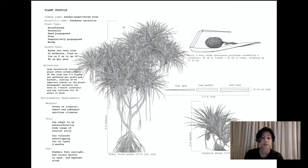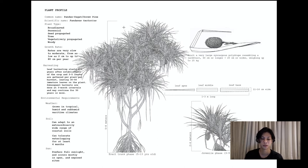For harvesting, you can start at the juvenile phase — around 3 years old — but you can only harvest about 5 to 6 leaves per month, because it's a slow-growing plant and needs healing time to produce new leaves before you can harvest again.